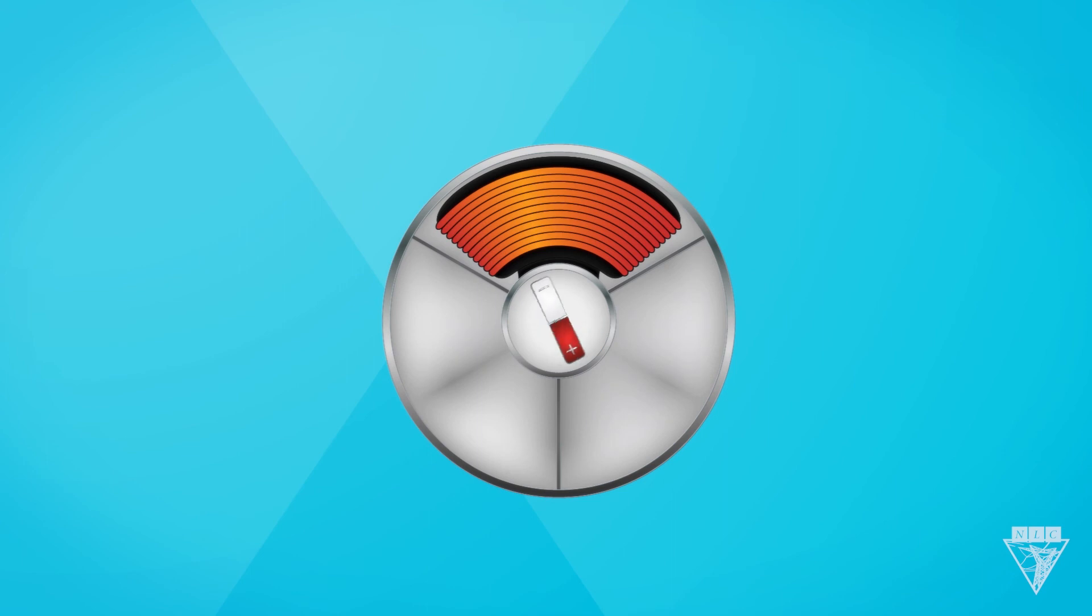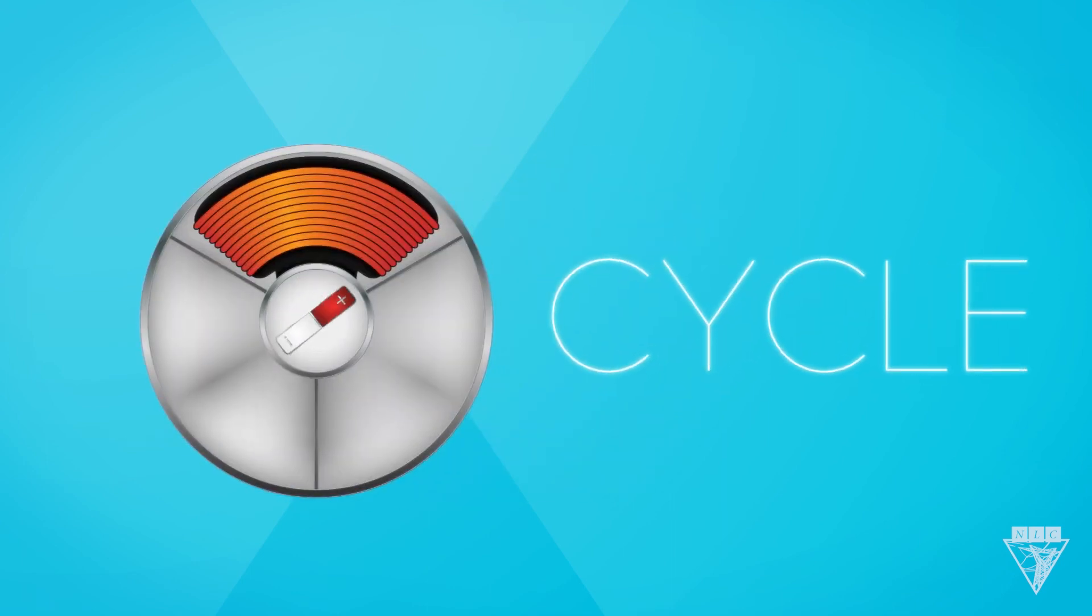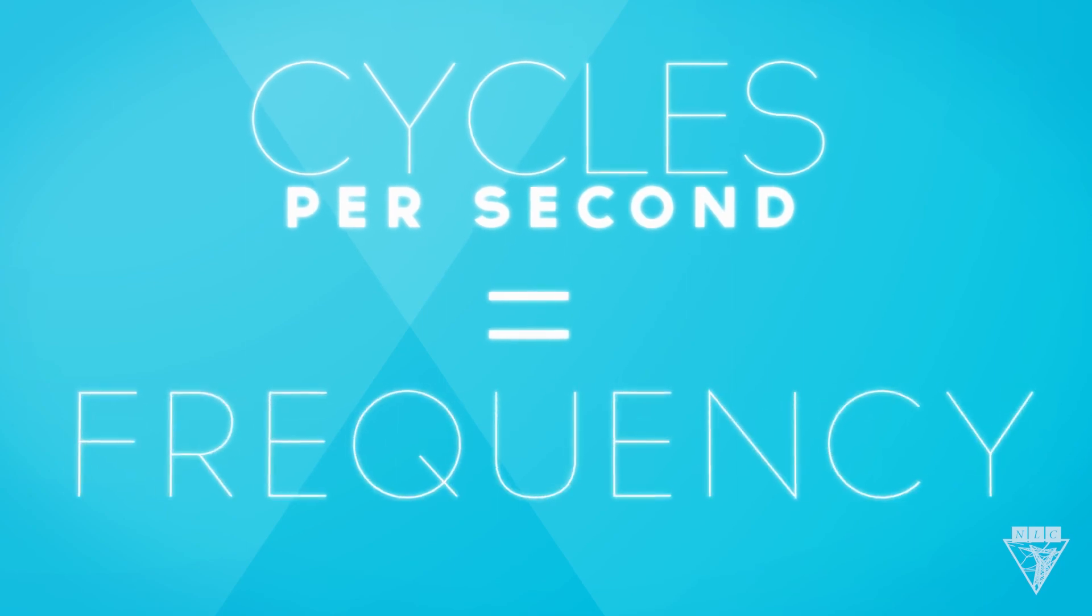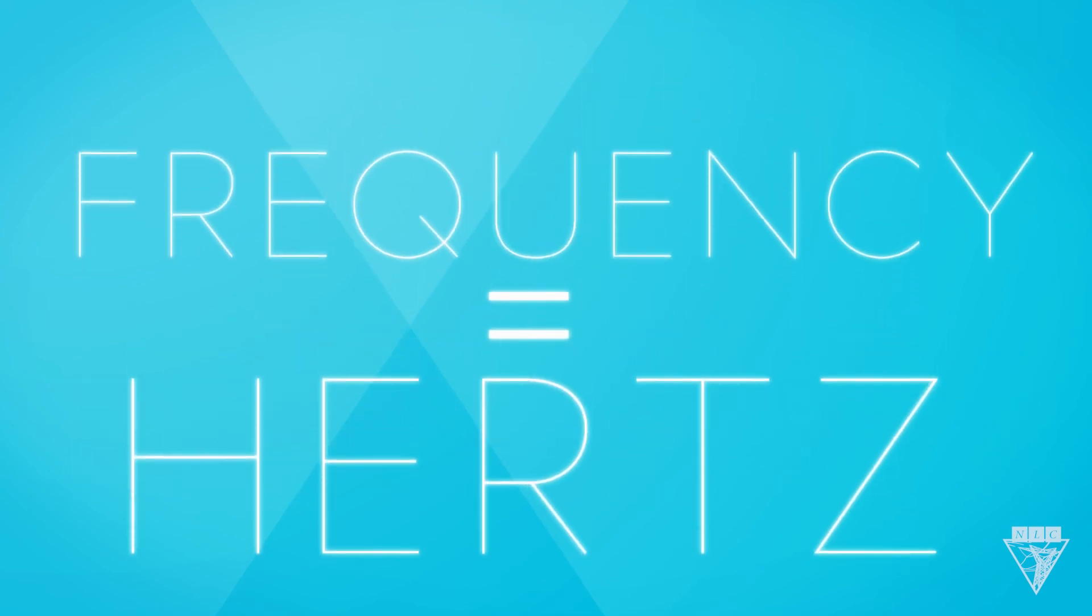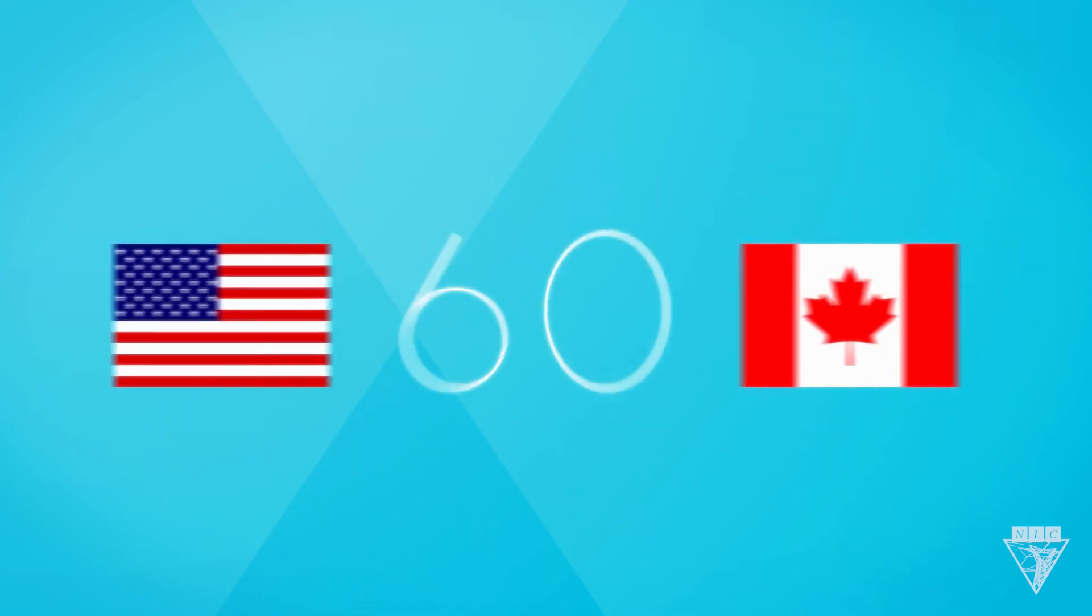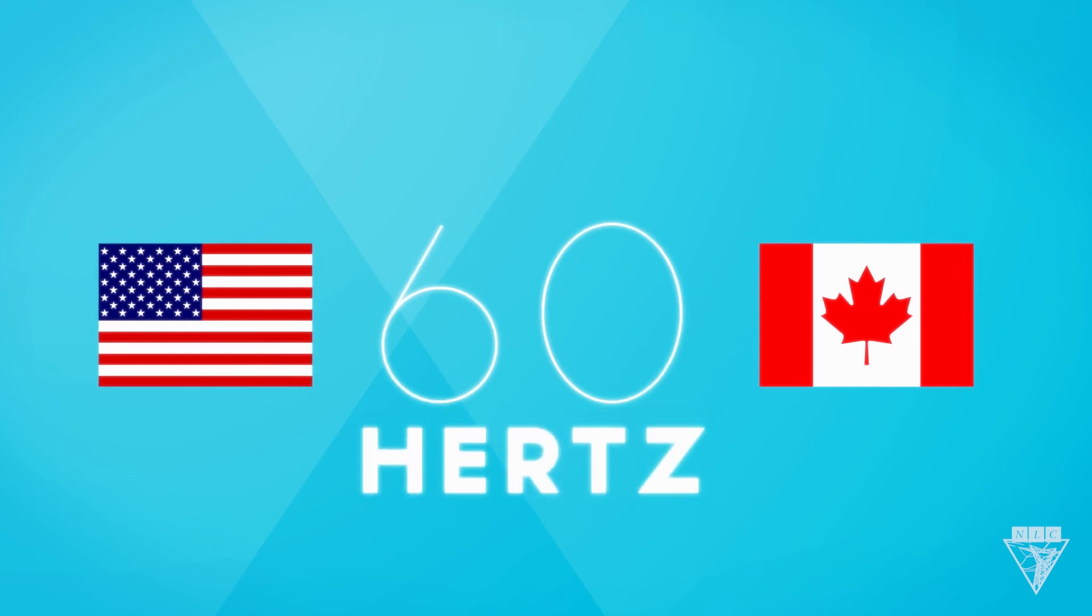Every completion of a sine wave in a generator is called a cycle. And the number of cycles a generator completes in a second is known as its frequency and is measured in hertz. Since generators in the U.S. and Canada run at 60 cycles per second, their frequency is 60 hertz.